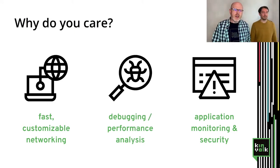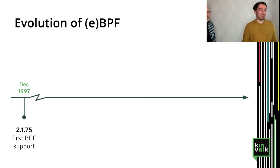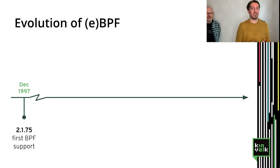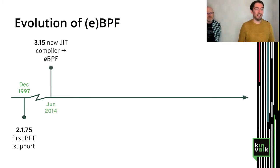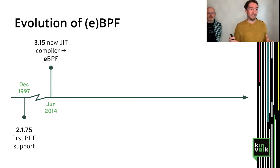Now I'll hand over to Alban to talk about the history of eBPF and how we got to where we are today. It started in 1997 with the first version of BPF, used for TCP dump — network capturing. Then much later, in 2014, we have the new eBPF — extended BPF — where Alexei Starovatov came up with the idea of a universal in-kernel virtual machine, with different eBPF programs running together for a variety of applications.